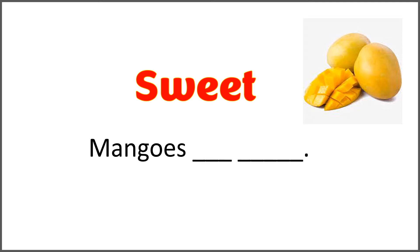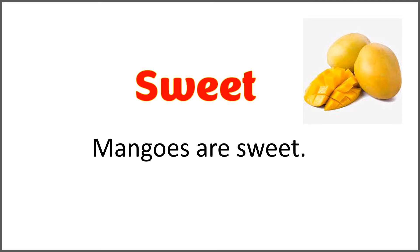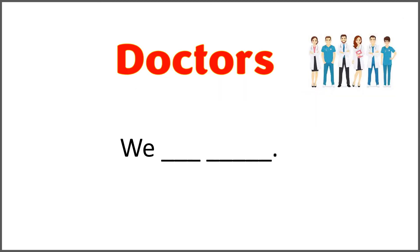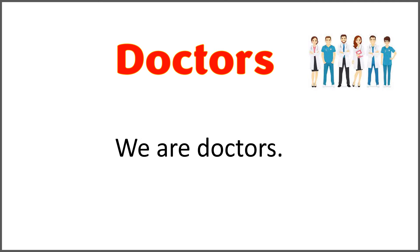The given word is 'sweet' and the sentence is 'mangoes blank blank.' Use 'are' with 'sweet' to complete the sentence. Pay attention — it is mangoes, more than one mango. And the answer is: mangoes are sweet.